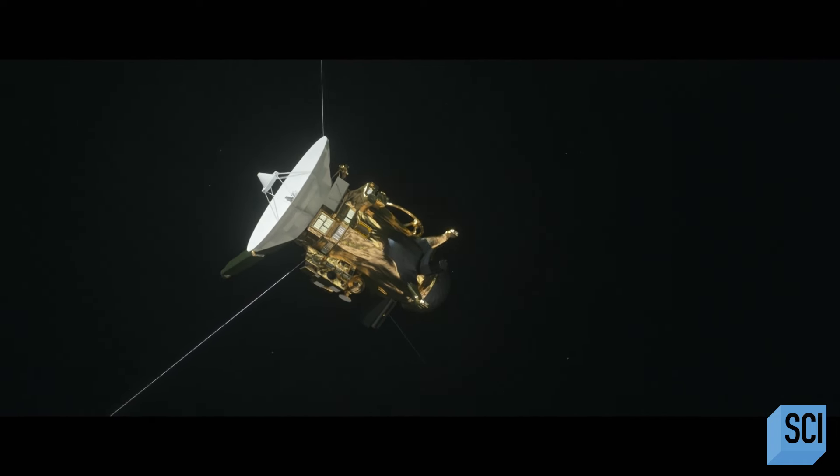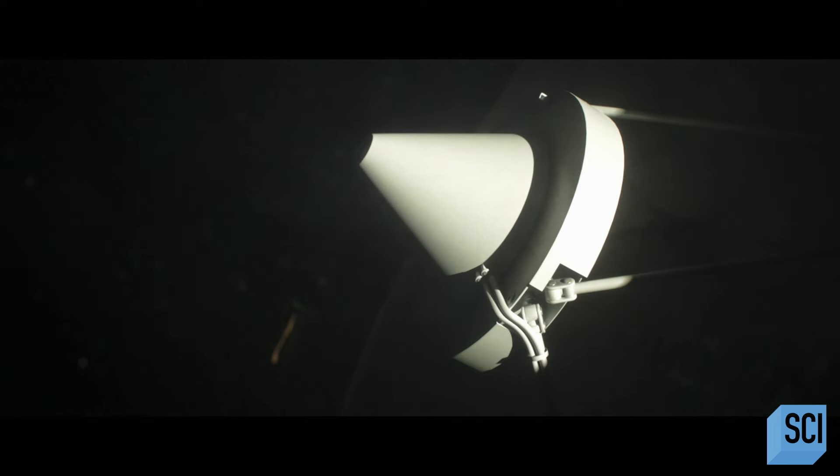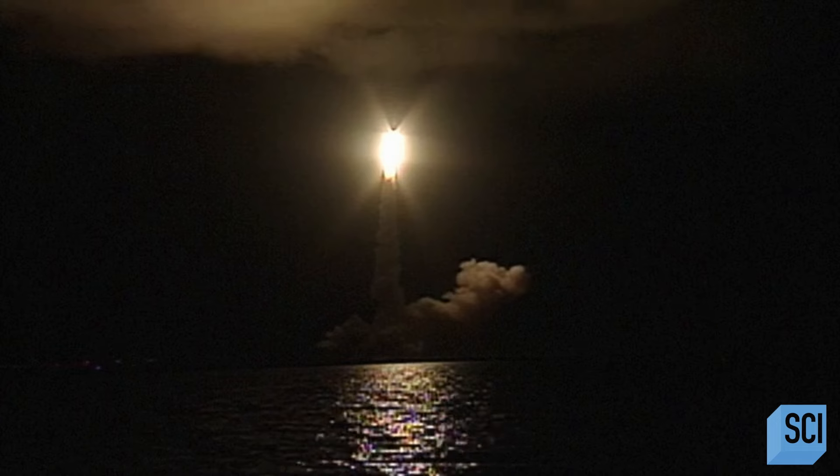For nine hours at a time, up to six times a week, Cassini sends its precious images of Saturn on the billion-mile journey back to Earth.